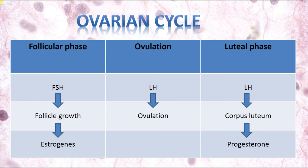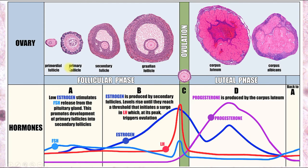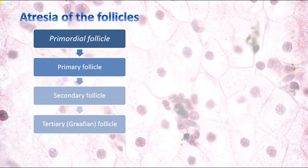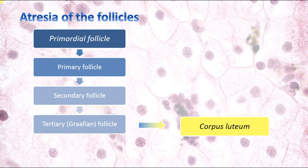Cyclic changes in the endometrium controlled by estrogens and progesterone are called the menstrual cycle. The ovarian and menstrual cycles together comprise the complete female reproductive cycle. The follicular cycle runs from primordial through primary, secondary, and tertiary follicle; the tertiary follicle forms corpus luteum, which involutes into corpus albicans. Each month about 10-20 follicles enter major growth, but usually only one achieves ovulation — the dominant follicle. Changes in the uterus and endometrium will be discussed in the second part of this topic.